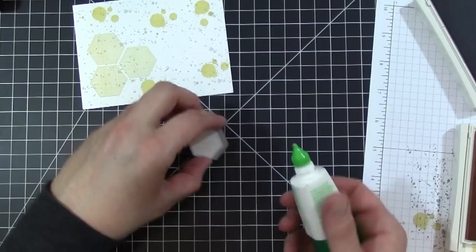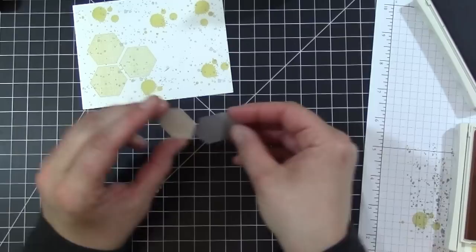I'm going to take the thanks much and stick that with a little bit of Tombow Mono onto my piece of Smokey Slate that I punched out with the punch. Now it has a little matte piece to the thanks much.